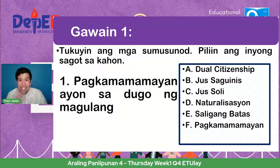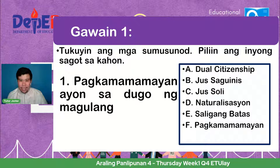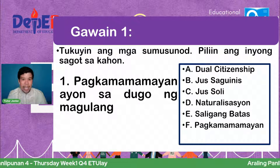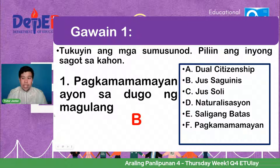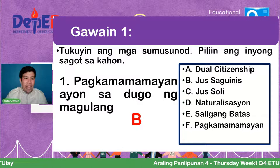Ano ba ang kasagutan sa number one — pagkamamamayan ayon sa dugo ng magulang? Ayon kay Ivan, Alexander, at iba pang mga mag-aaral — ang kasagutan ay letter B, jus sanguinis. Tama ang kasagutan! Palakpakan ang inyong mga sarili — tunay na kahusayan.